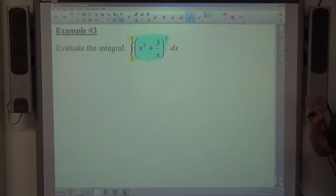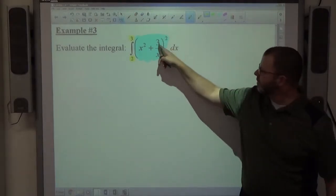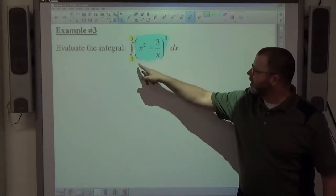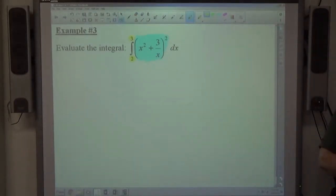The only thing that would be a red flag, that there might be something undefined, is this 3 over x. 3 divided by 0 is undefined, but 0 doesn't lie on the interval from 2 to 3, so it's a legal function.